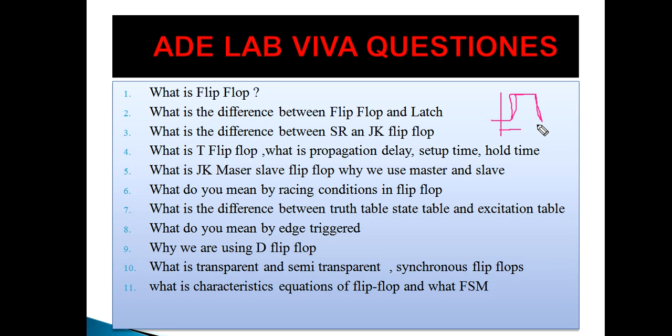In flip-flops there are three types: transparent, semi-transparent, and sequential. Transparent means whenever you give the input, the output changes. In semi-transparent, the input changes when the enable signal is high. In sequential, the input changes along with the clock — either during the positive edge or the negative edge. Combinational circuits' output depends only on the present input, whereas in sequential circuits the output depends on both the present input and the past output and input.